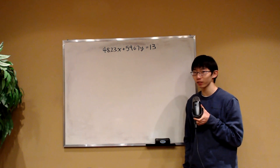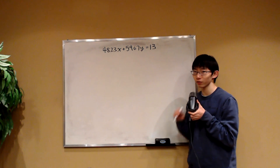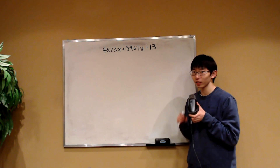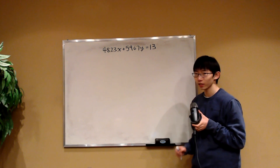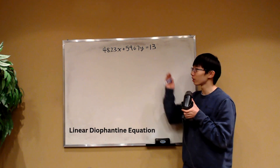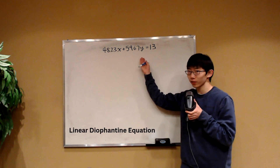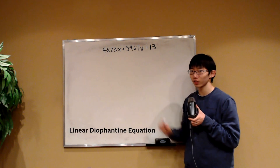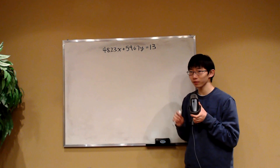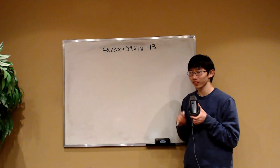Behind me is a very special class of equations in number theory. It is called a linear Diophantine equation, and the name kind of speaks for itself.